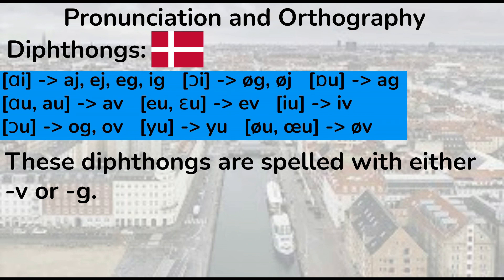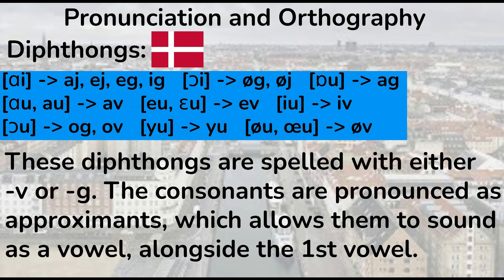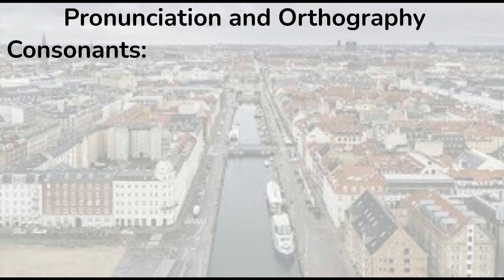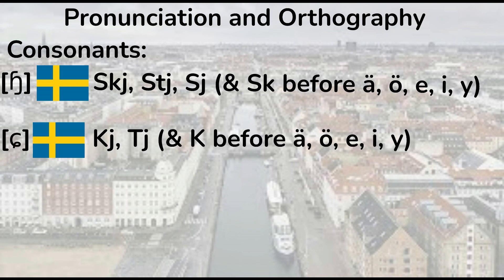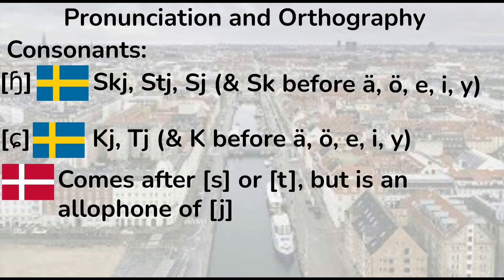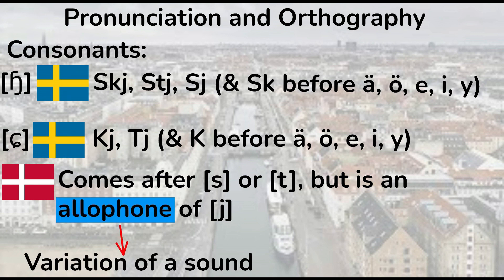These diphthongs are spelled with either v or g. The consonants are pronounced as approximants, which allows them to sound as a vowel alongside the first consonant. For example, 'ev' represents 'el' or 'el'. In terms of consonants, Swedish contains the consonant 'hr', which is spelled 'skj', 'ftj' for 'sj' or 'sk' before these five vowels. There's also the sound 'sh', which is spelled 'kj' for 'tj' and 'k' before these five vowels. In Danish, this comes after s or t, but is an allophone of the sound y, an allophone being a variation of the sound.